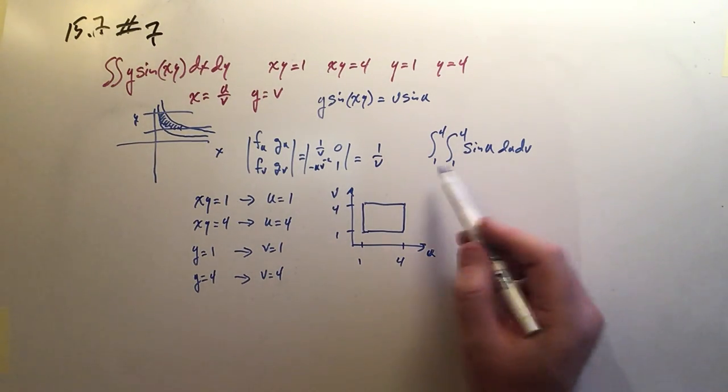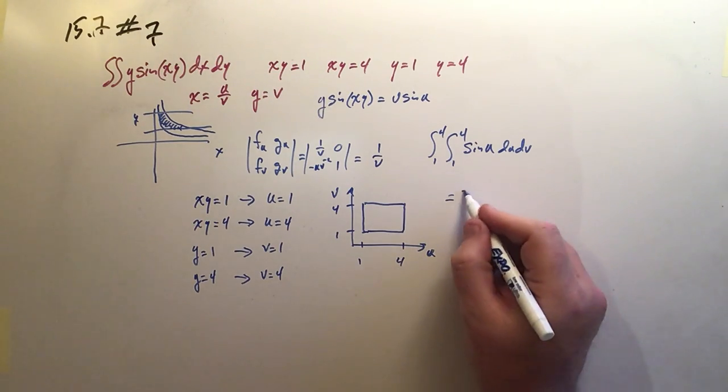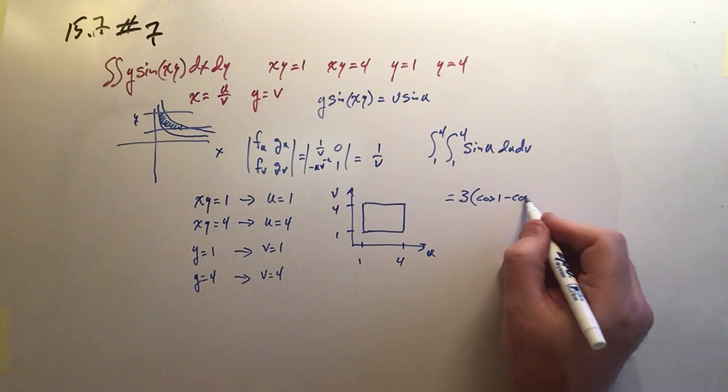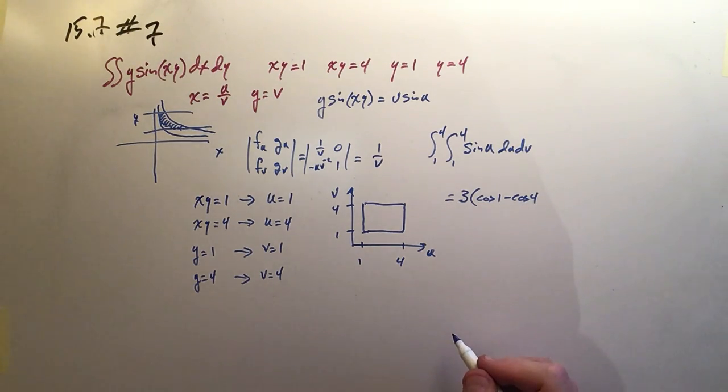Okay, when you go through the steps to do this, you get an answer of 3 times the cosine of 1 minus the cosine of 4. That's it.